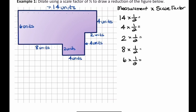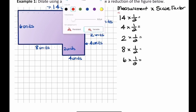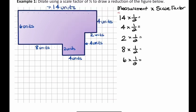Go through these one by one and multiply by one-half. Here's a little math hack: multiplying by one-half is the same thing as dividing by 2. So 14 times one-half is like 14 divided by 2, which is 7. That makes sense — if we're reducing by one-half, everything should be half of what it once was. So 4 times one-half is 2, 2 times one-half is 1, 8 times one-half is 4, and 6 times one-half is 3.